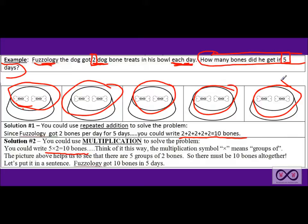Two. Multiples of two. Two, four, six, eight, ten. So there we have it. And we put in a complete sentence. You got yourself a nice complete answer. Well rounded answer. Fuzzology got ten bones in five days.